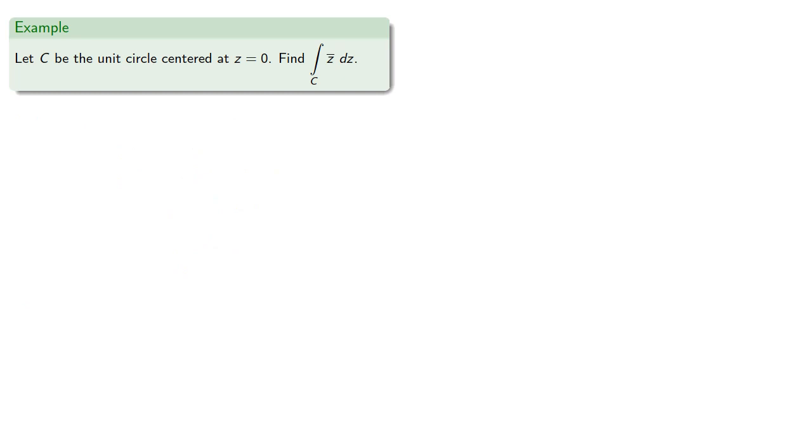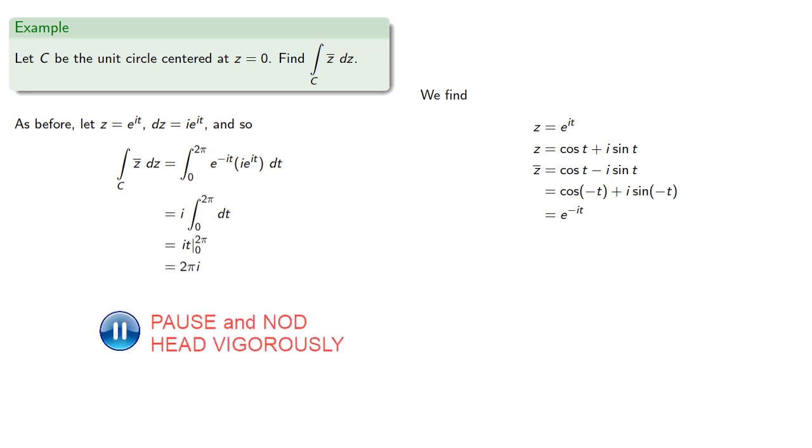And in fact it's a little bit worse than that. Let's consider something like the conjugate of Z, which is defined for all points inside the unit circle. So as before, we'll let Z equal e to the i t and find... And even though the conjugate is defined everywhere inside the unit circle, we still get a non-zero value for the integral.